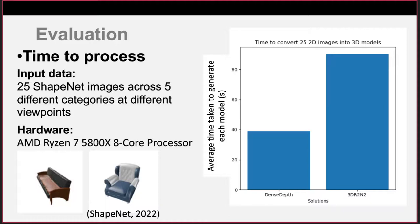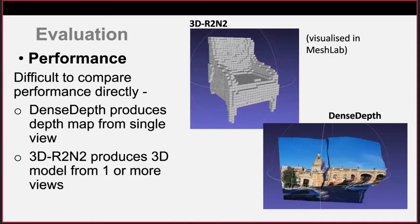I tested this on my home computer and found DenseDepth was significantly faster on average. However, 3D-R2N2 can also run on a GPU with NVIDIA CUDA, so if this was set up, 3D-R2N2 would likely also speed up. Comparing the performance of these two solutions directly is not possible since they have different outputs and different ways of measuring success, so instead I evaluated them against other similar solutions.